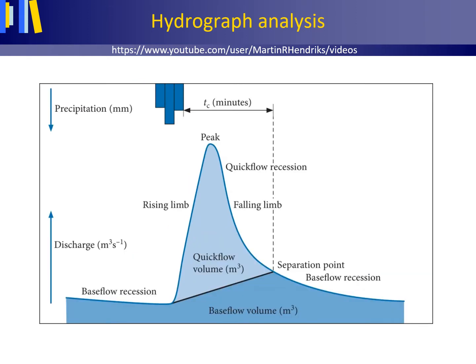This figure shows a hydrograph — a graph of the changes in discharge along the vertical axis with time along the horizontal axis for a precipitation event — together with a number of hydrological terms used to describe the hydrograph.